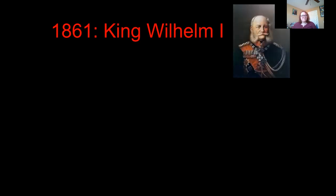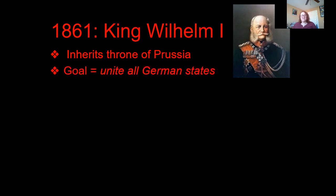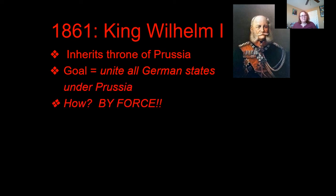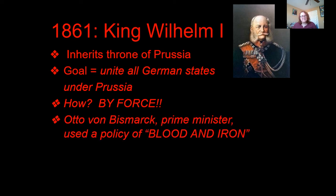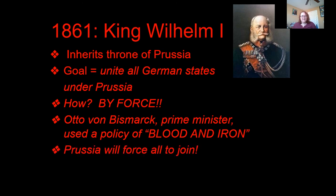So the German Confederation — this is pre-1860s — the German-speaking part of Europe was made up of many different states, very similar to what was set up in Italy. You see Prussia, the Austrian Empire, Moravia, Bohemia — all different regions within Germany. Neighboring countries included the Netherlands, Denmark, Sweden, and Belgium.